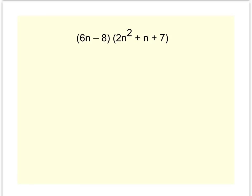For this second example, multiplying a binomial by a trinomial, you just have to make sure that everything in the first polynomial multiplies with everything in the second. So the 6n is going to multiply with the 2n², the positive n, and the 7. That gives us 12n³, plus 6n², plus 42n.